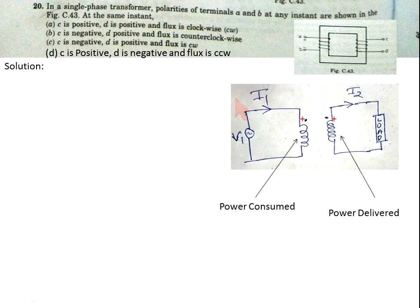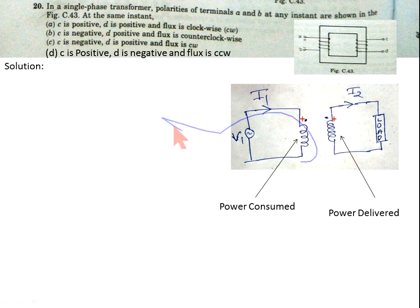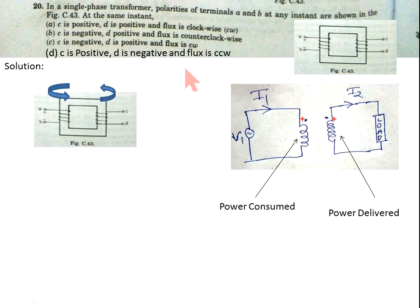Now come to the solution. Before solving this problem, we have to understand the power consumed and power delivered concept in the single-phase transformer. When the primary current enters at the positive terminal, this is the power consumed operation. If the secondary current is leaving the positive terminal, then this is the power delivered. So if one winding is power consumed, the other winding must be power delivered, and vice versa.